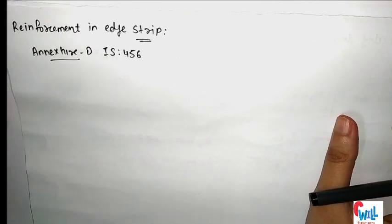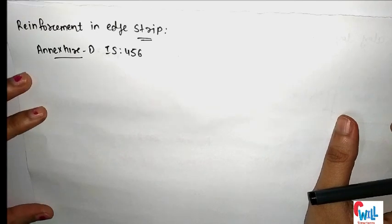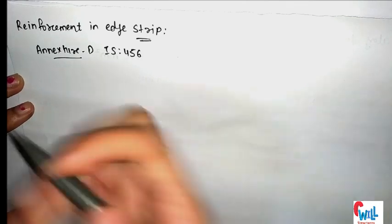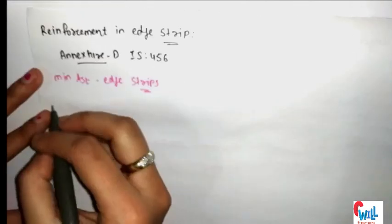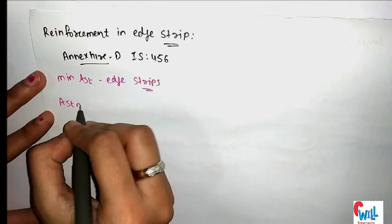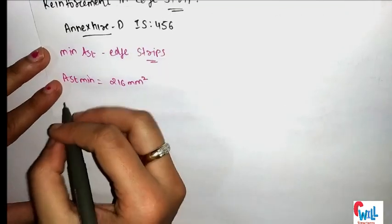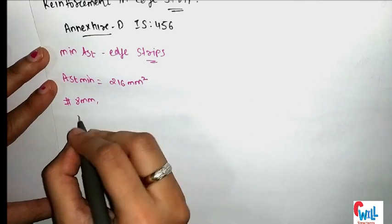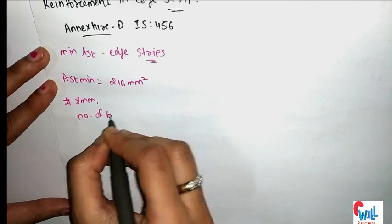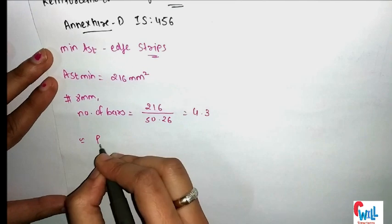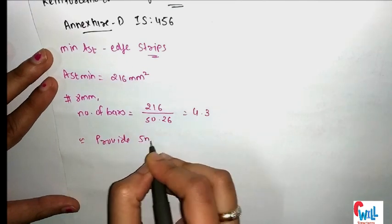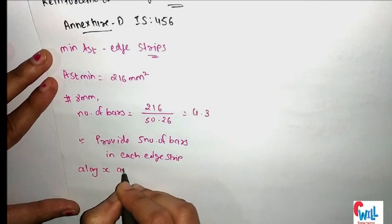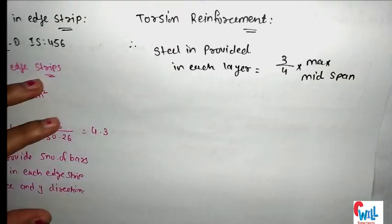Next step: reinforcement in the edge strips. As per Annexure D of IS 456, we provide at least minimum reinforcement in edge strips. Minimum Ast = 216 mm². Using 8 mm bar diameter, we provide 5 number of bars in each edge strip, along both X and Y directions.